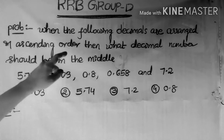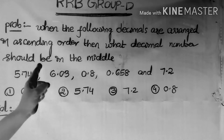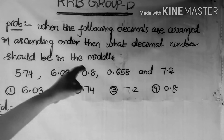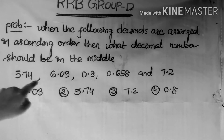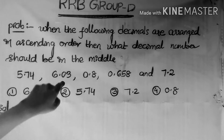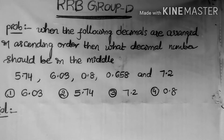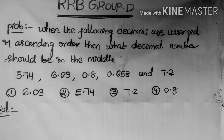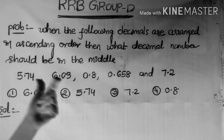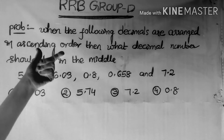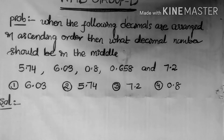When the following decimals are arranged in ascending order, then what decimal number should be in the middle? The given decimal numbers are 5.74, 6.03, 0.8, 0.658, and 7.2. We arrange these numbers in ascending order and find the middle term.